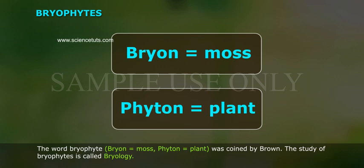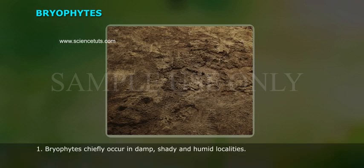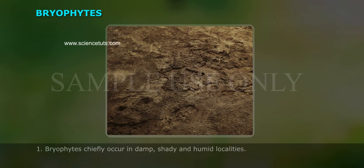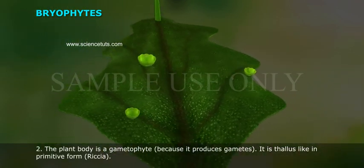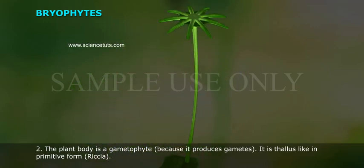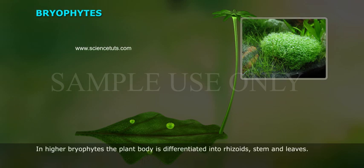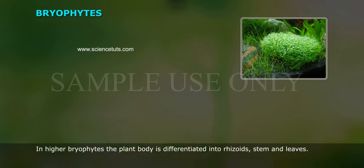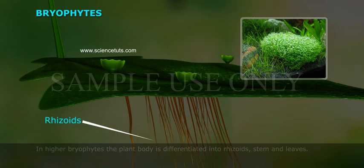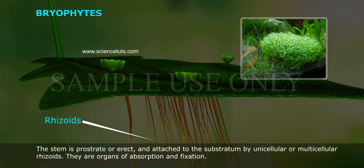Bryophytes are characterized by the following features. 1. Bryophytes chiefly occur in damp, shady and humid localities. 2. The plant body is gametophyte because it produces gametes. It is thallus-like in primitive forms. In higher bryophytes, the plant body is differentiated into rhizoids, stem and leaves. The stem is prostrate or erect and attached to the substratum by unicellular or multicellular rhizoids.